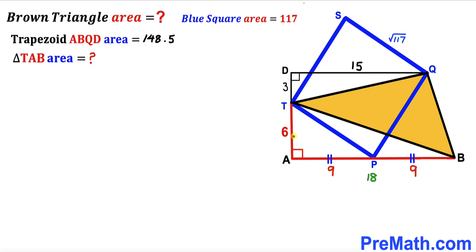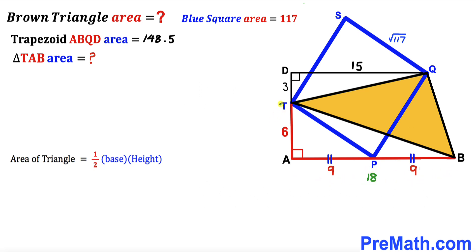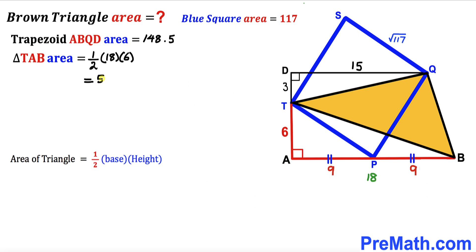Now we calculate the area of right triangle TAB. Using the area of a triangle formula: area equals one half times base times height. The base of triangle TAB is 18 and the height is 6. So the area is 1/2 times 18 times 6, which gives us 54 square units.